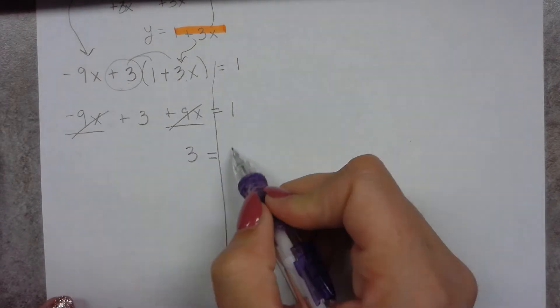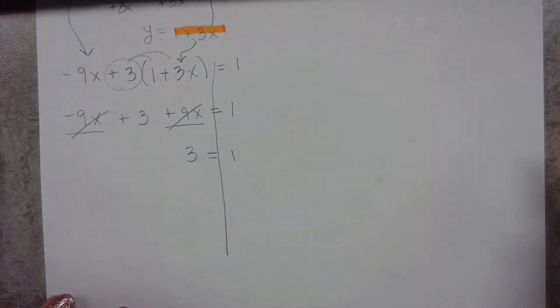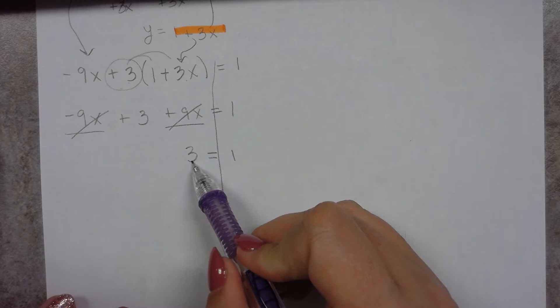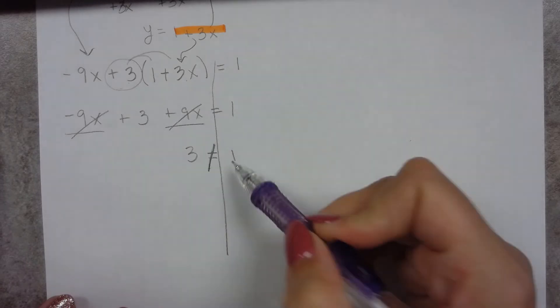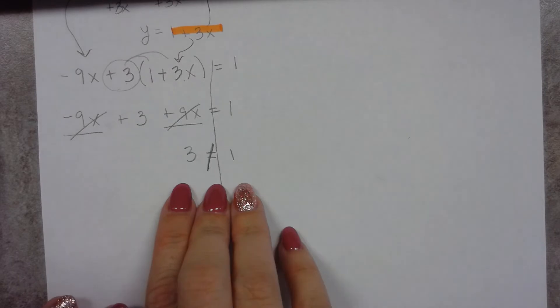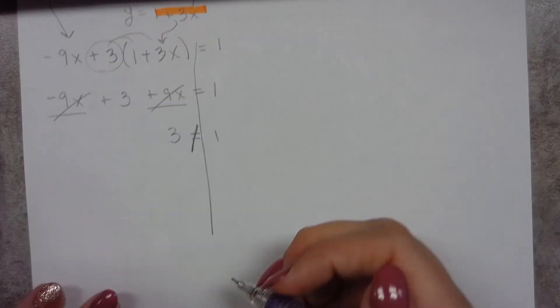Well, I don't know about you guys, but that should be looking kind of funny. I don't know, but 3 is not the same as 1. Those are not equal. Now when this happens, that doesn't mean we made a mistake. When this happens, that means that our system has no solution.